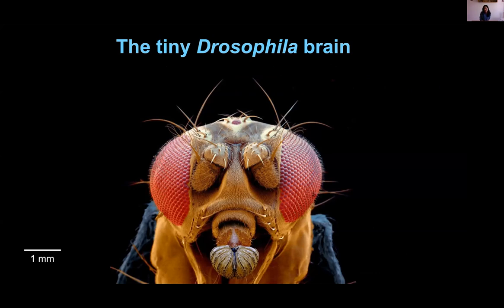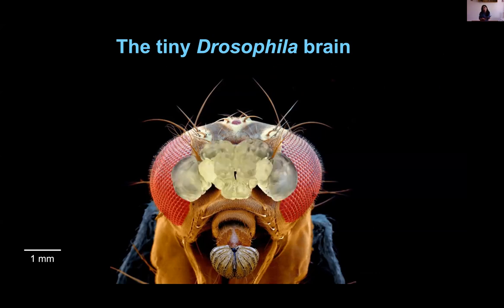As you heard from many talks, we are also using the fly brain, Drosophila, as a model system for various reasons. Our favorite reasons are: first, it's a relatively small brain with relatively few neurons, so we can map how neurons are connected to each other. We can also record how they are activated by different stimuli, and we have amazing transgenic tools to label neurons, record activity, or map connections. Together these tools really motivate our research.